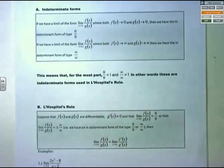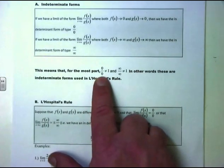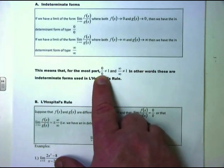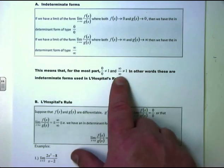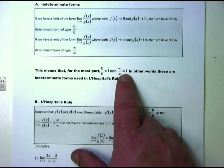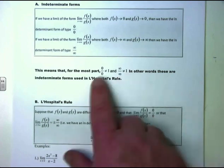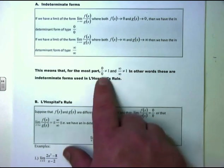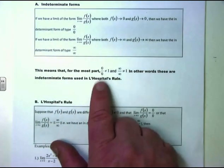Just because it's 0 over 0, that's an indeterminate form — meaning we cannot tell what's going on. They don't always cancel, and you don't always get 1. Same idea with infinity over infinity: infinity over infinity never equals 1. These are indeterminate forms of the L'Hôpital's rule type, applying when we have 0 over 0 or infinity over infinity.